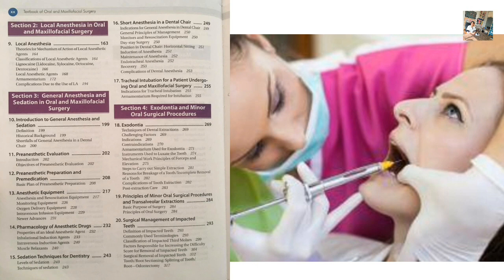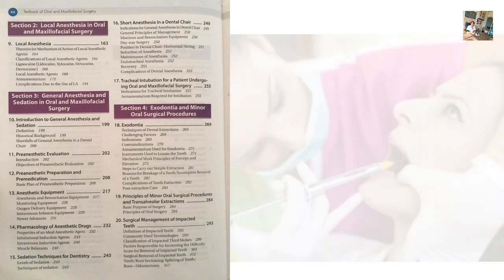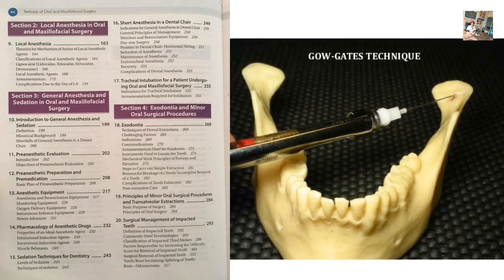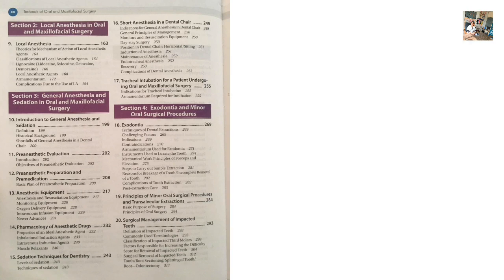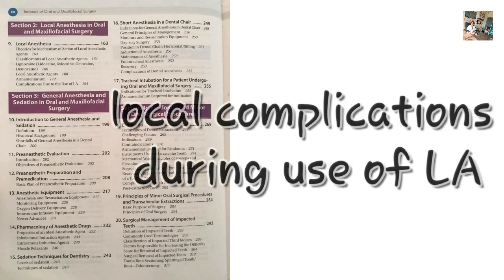Make a short note for all nerve blocks. For the mandibular nerve block, we have the Gow-Gates mandibular nerve block, the closed-mouth nerve block, and the Akinosi mandibular nerve block. These are important from a short-note and viva point of view. We should also know local complications during the use of LA.